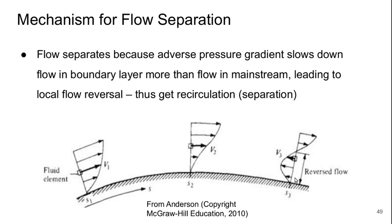And then if we keep going, the flow near the wall will keep slowing down more than the flow here and will eventually get reverse flow in a region. And that means that the flow is separated between location two and three.